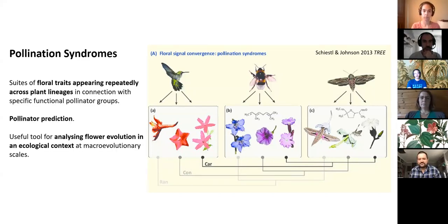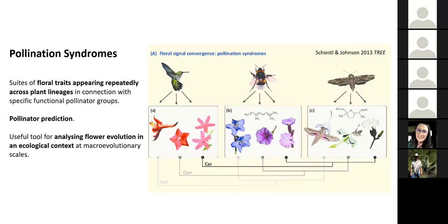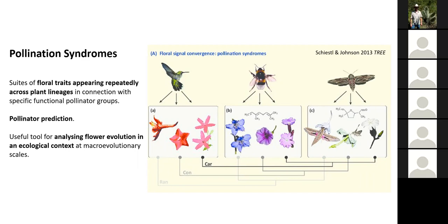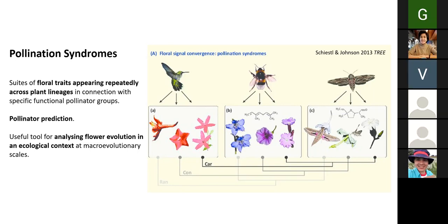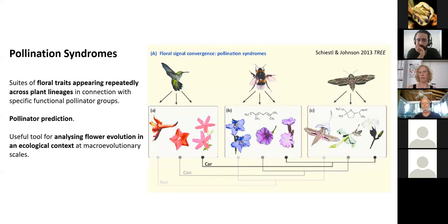Pollination syndromes are a very useful tool used to predict pollinators, particularly in large plant groups such as Melastomataceae. They allow you to predict pollinators if you cannot observe every plant species in the field to empirically verify its actual pollinator. They are a very useful tool for analyzing flower evolution under an ecological perspective at a macro-evolutionary scale. Empirical pollinator observations form the core and the basis of pollination syndromes.